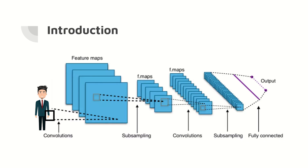Now this picture might not be clearly understandable for you, but I am going to explain step by step — what is what — and then you can correlate it with this diagram. You can see that here we do convolution and then subsampling, again convolution, again subsampling, fully connected layer, and then we get output.